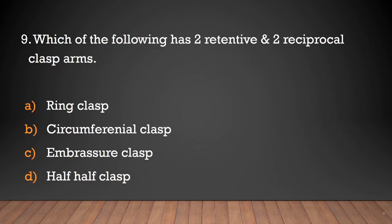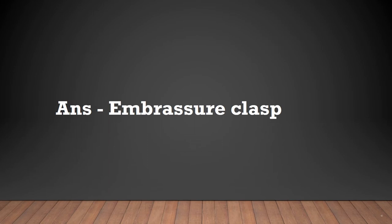Which of the following has two retentive and two reciprocal clasp arms? Ring clasp, circumferential clasp, embrasure clasp, or half and half clasp? The answer is embrasure clasp — embrasure clasp has two retentive and two reciprocal arms.